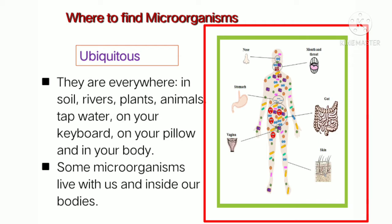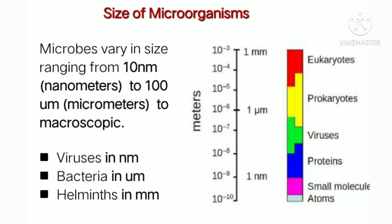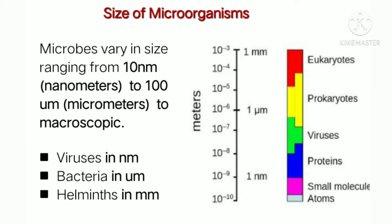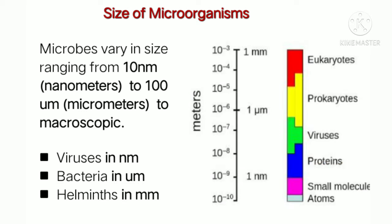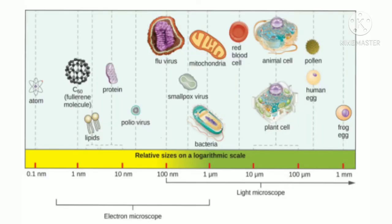How small are microorganisms? Microbes range in size from 10 nanometers to 100 micrometers, up to some macroscopic microorganisms. Viruses fall under the nanometer scale, while prokaryotes like bacteria and protozoa come under the micrometer scale. Helminths are macroscopic and multicellular, coming under the millimeter scale and visible to the naked eye.